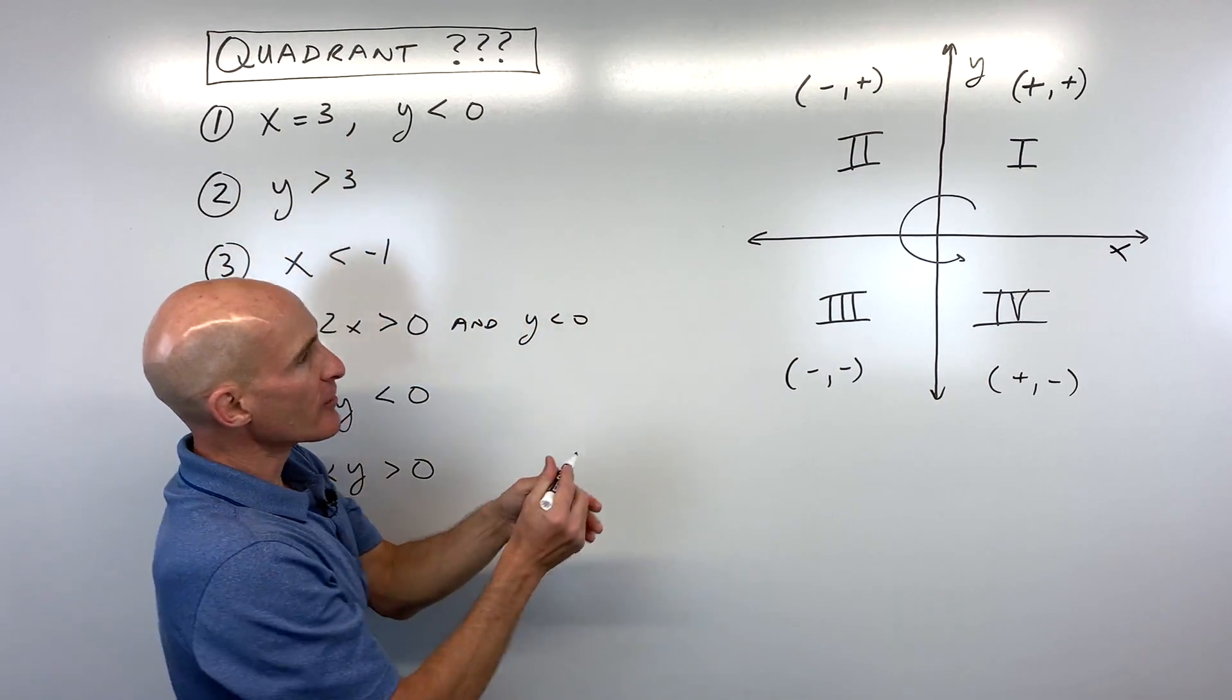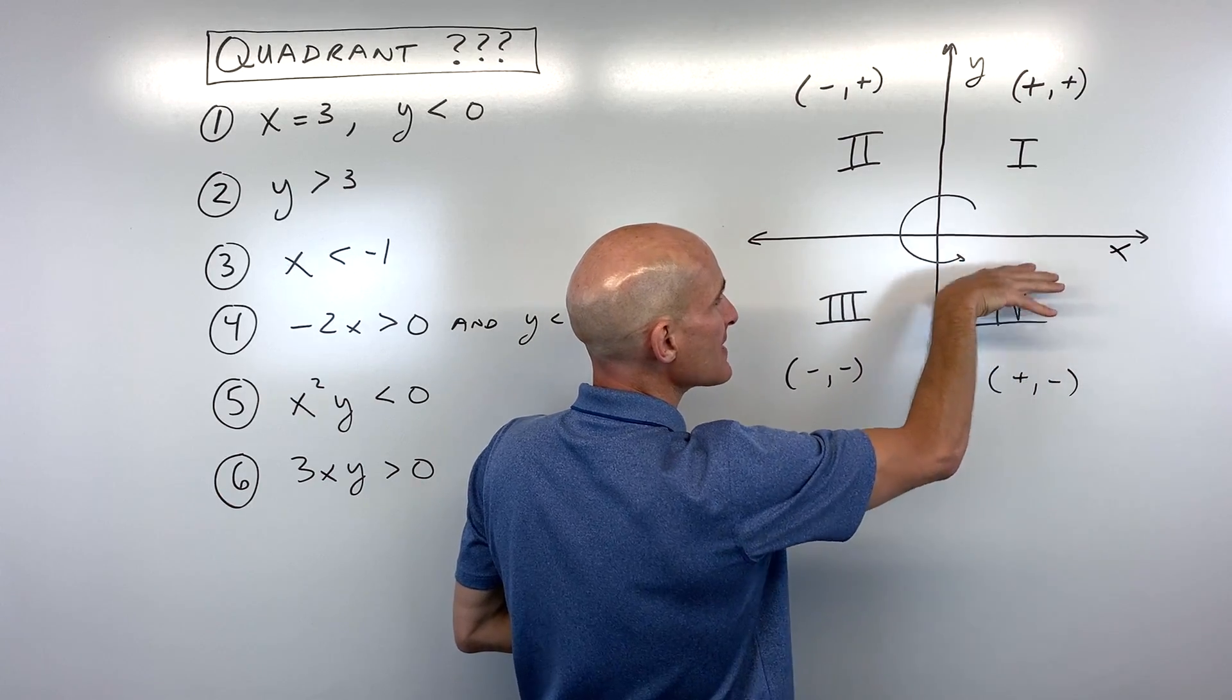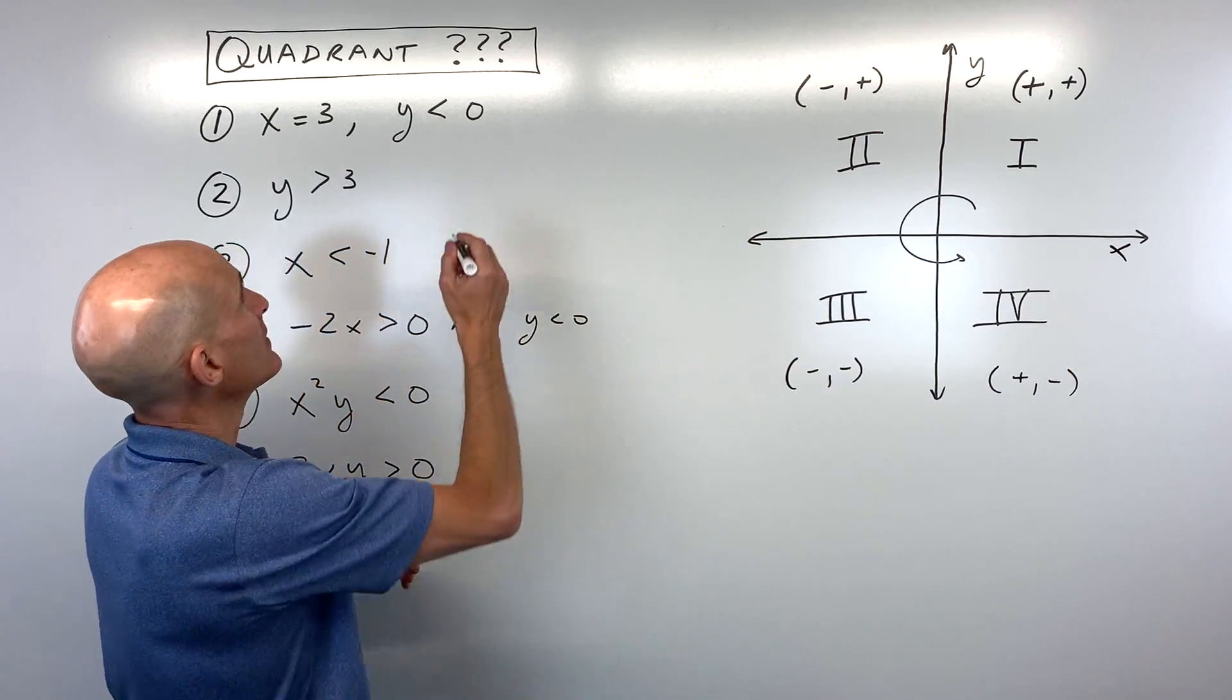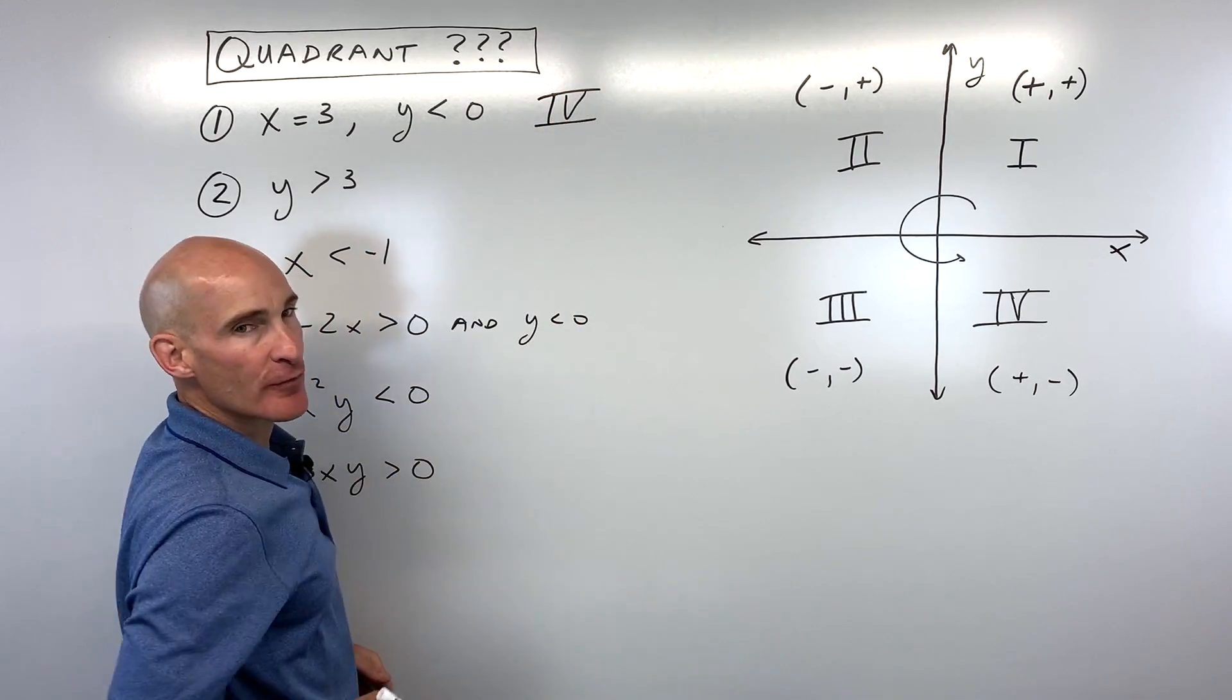And x is equal to three, that means we're going three to the right, but y is less than zero, meaning negative. So that's going to put us right here in the fourth quadrant. So I'm just going to use the Roman numeral IV for four.